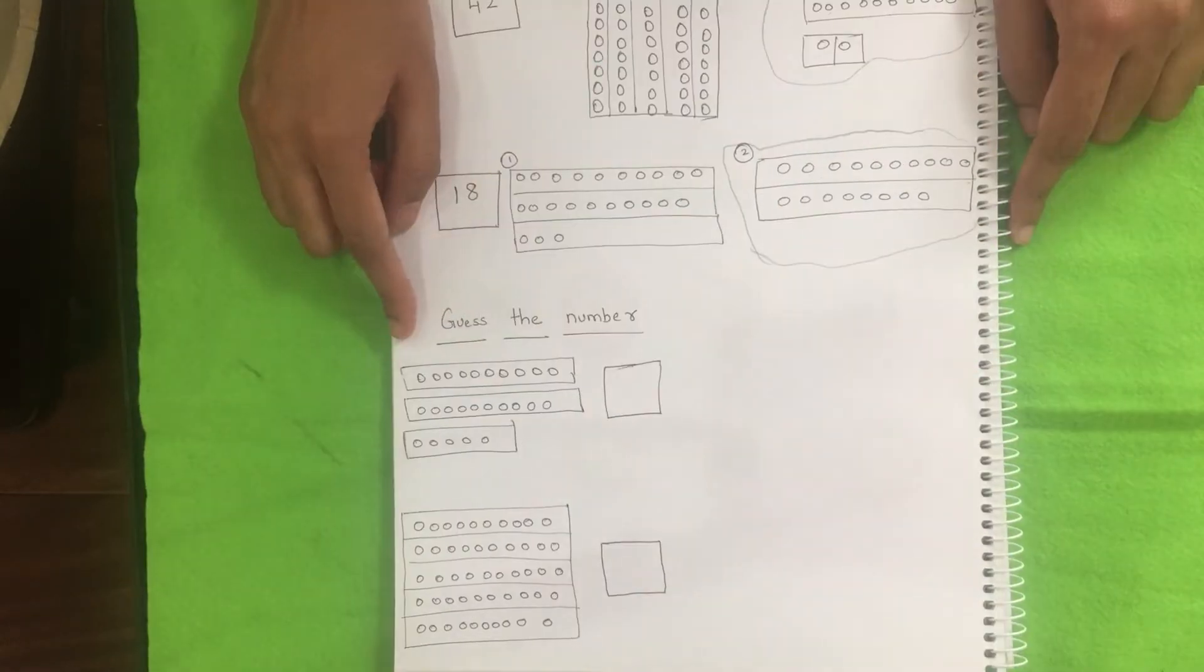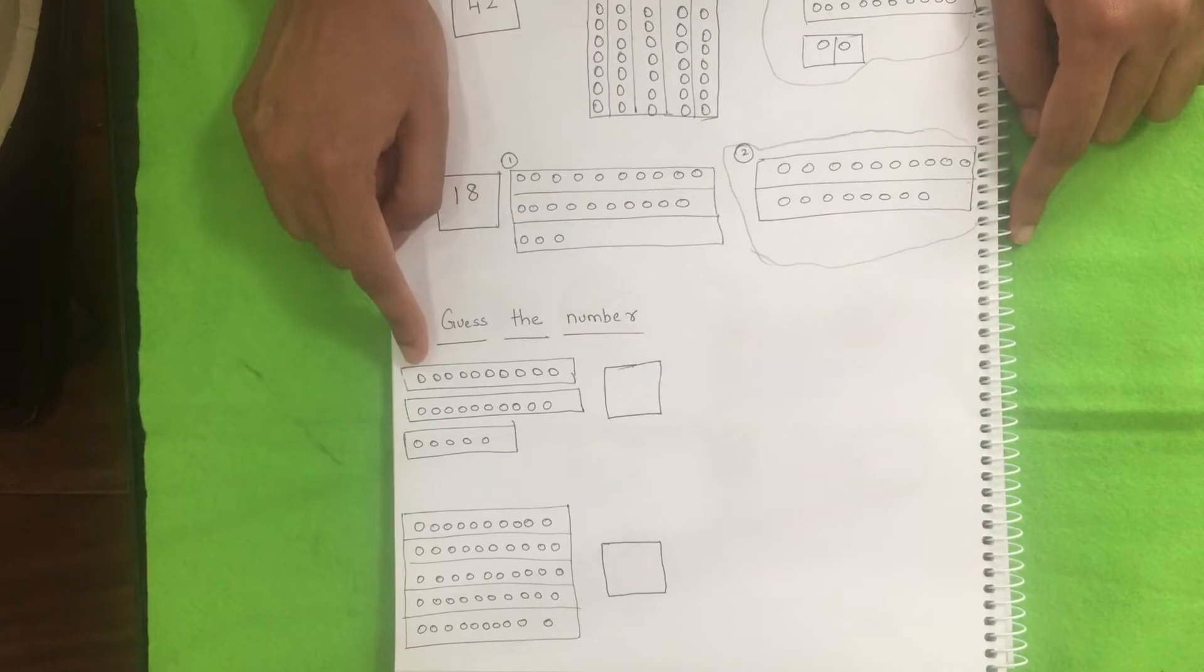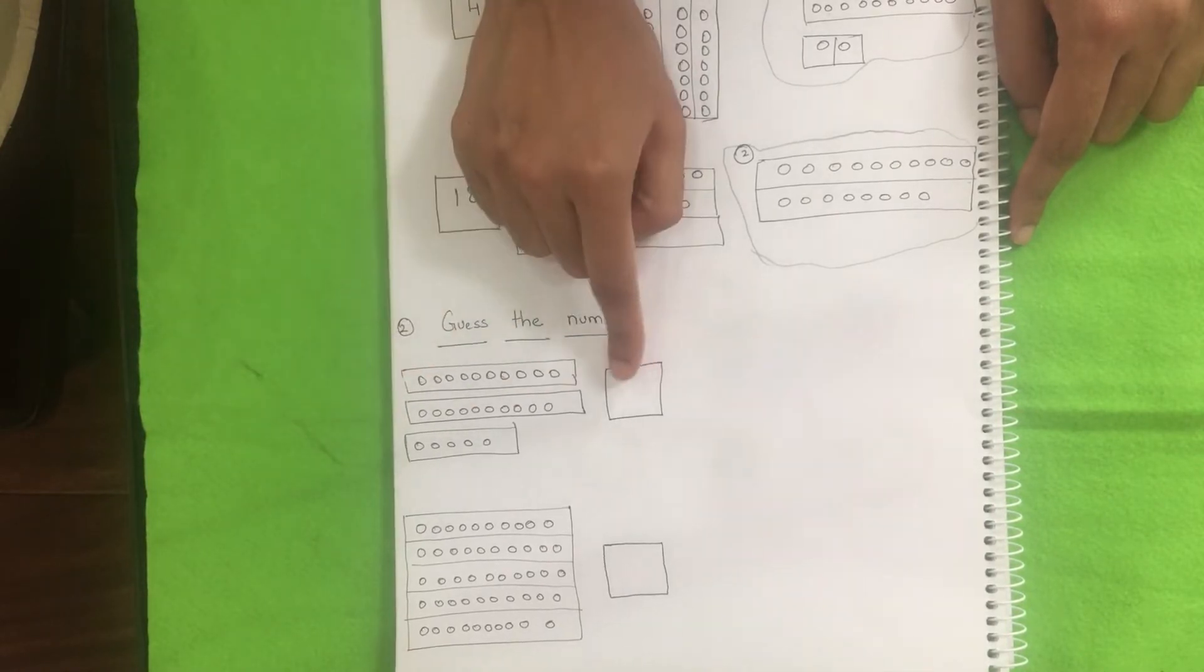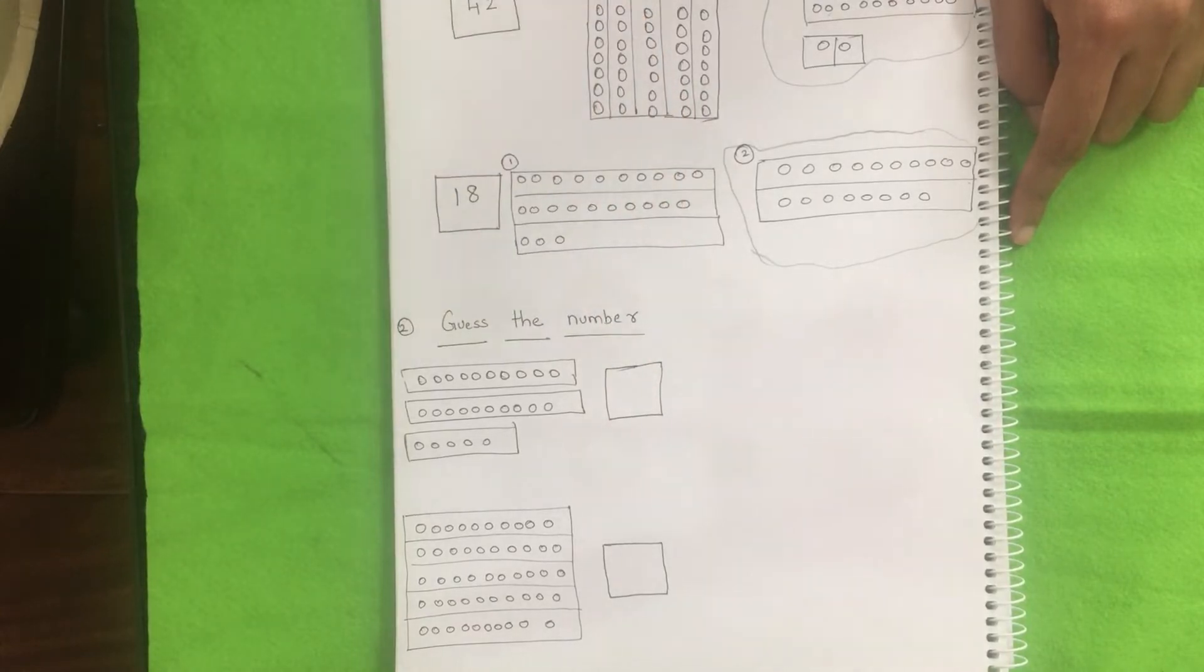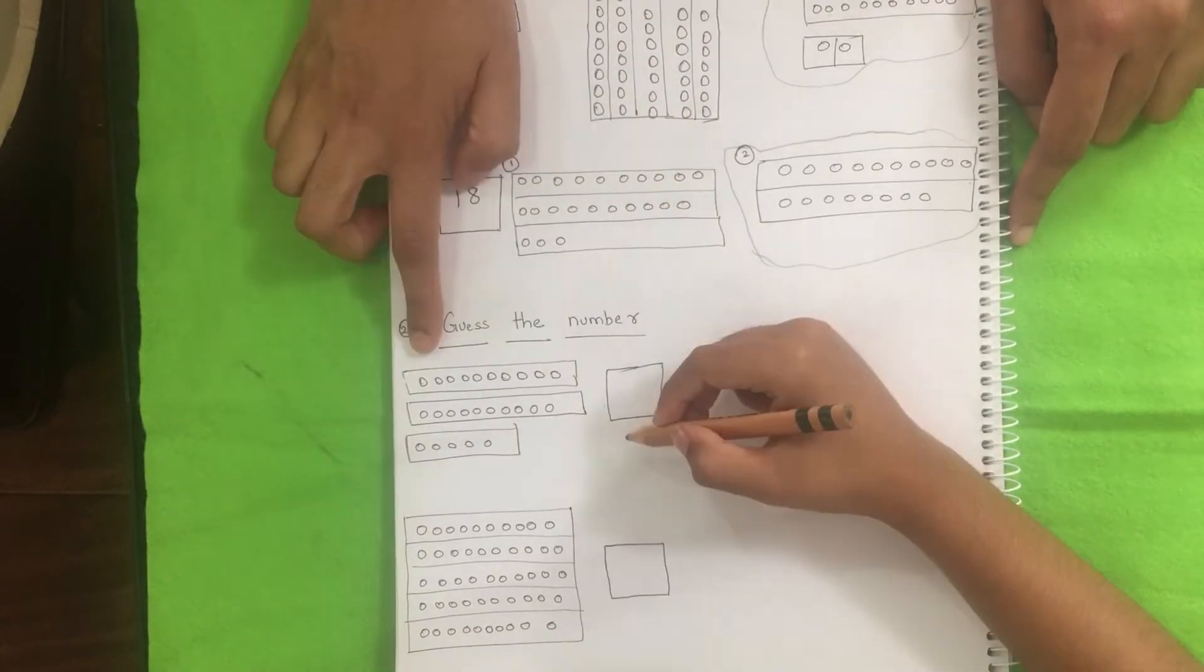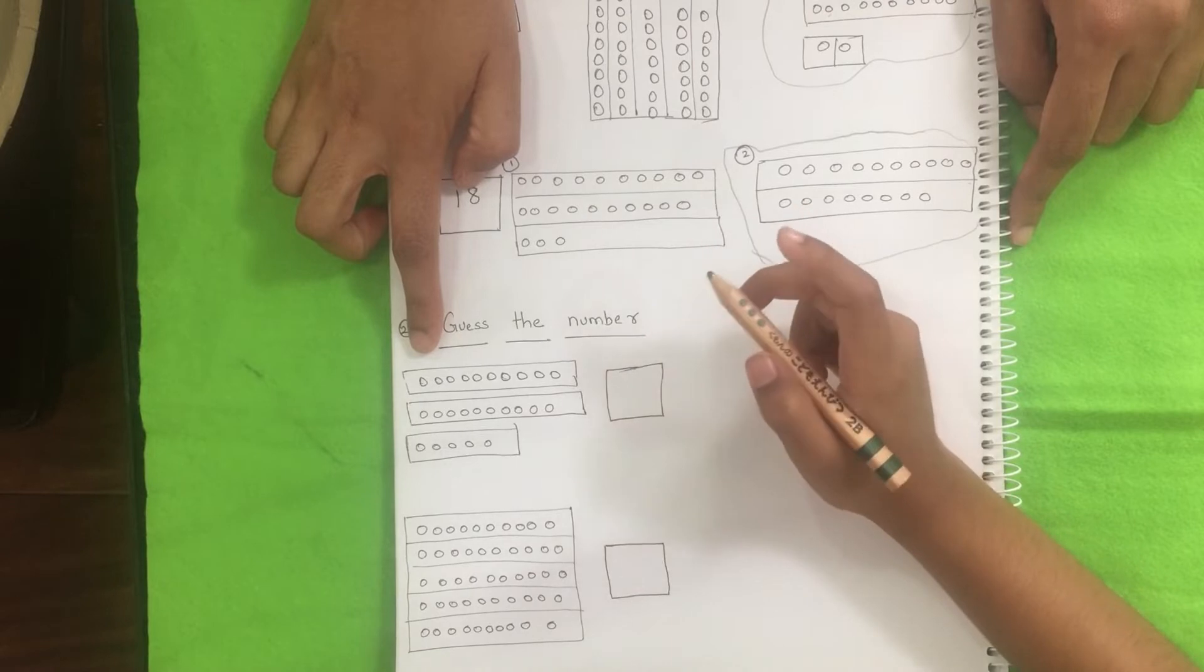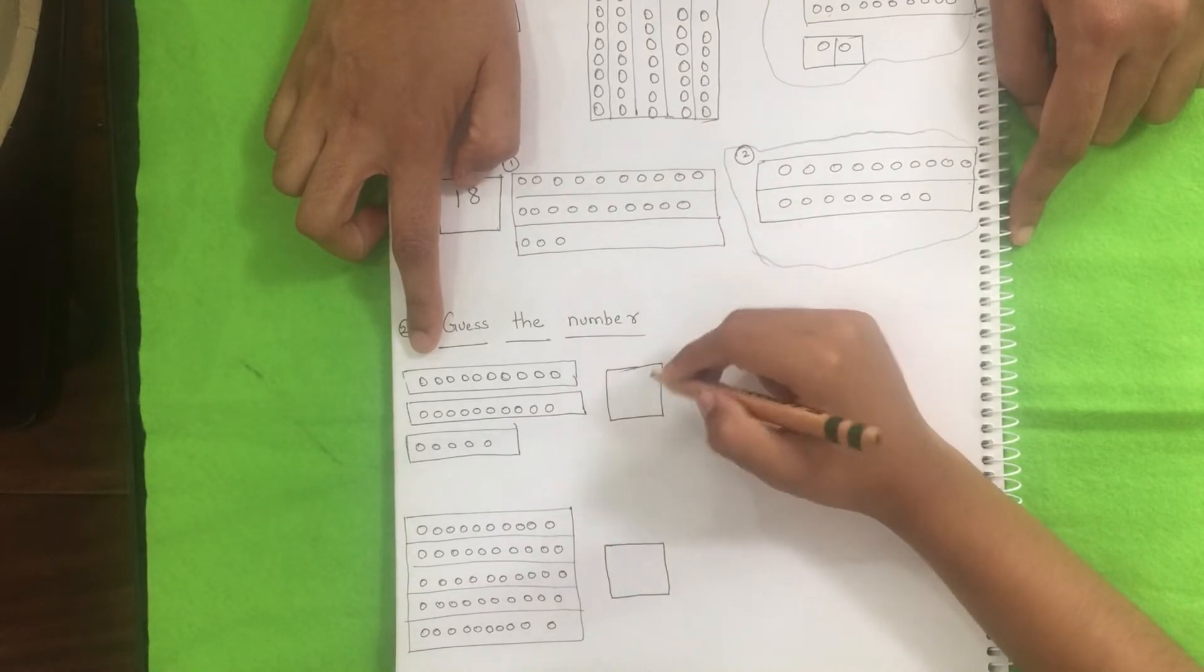Yes, the number. So quantity versus number. So you need to find out how many tens and how many units are there and write the number here. Okay, start. Can you tell me how many tens are there? Two tens. Twenty. Five. Good.